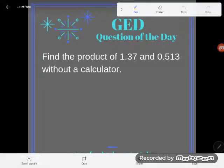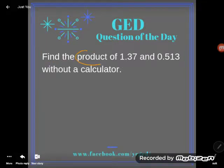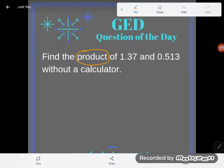Hey GED students, it's GED question of the day time. Today we've been asked to find the product of 1.37, as you guys would say, or 1 and 37 hundredths as I would say, and 0.513 or 513 thousandths, and they want me to do that without a calculator.